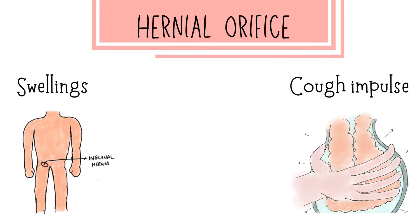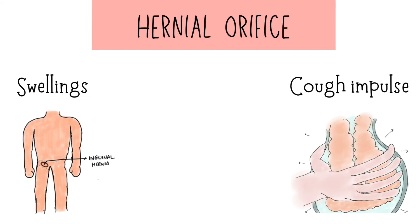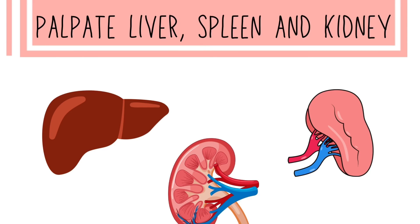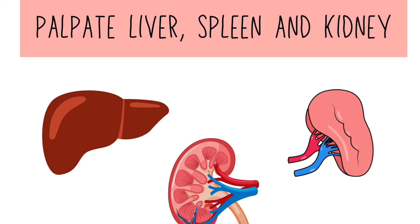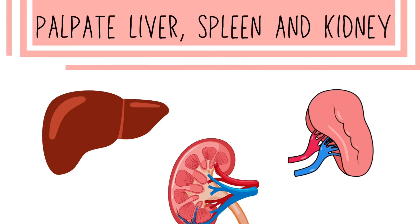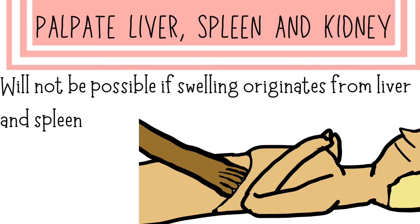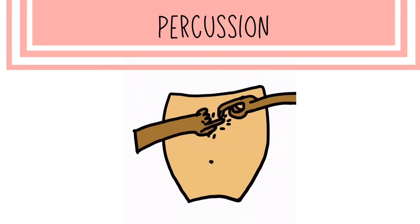We also have to palpate the hernial orifice to look for swellings like inguinal hernia and inguinal lymph nodes, and check for a palpable cough impulse by asking the patient to cough. Then palpate the liver, spleen, and kidney, as these are important organs that may give a clue about the origin of the swelling. Try to insinuate your fingers between the swelling and the costal margin — swellings originating from the liver and spleen, which lie just beneath the costal margin, will not allow this.